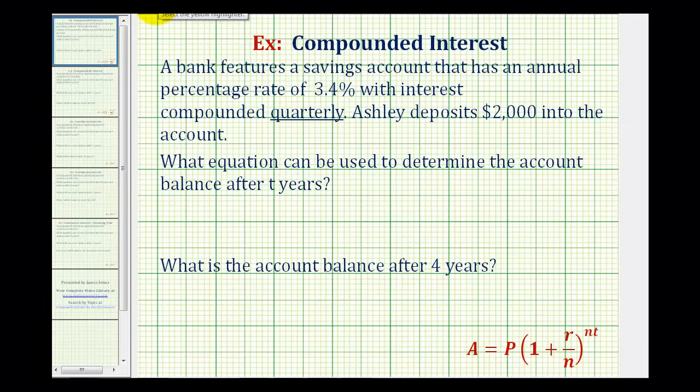The compounded interest formula is given here below, where P is the principal or starting amount, and R is the annual interest rate expressed as a decimal.